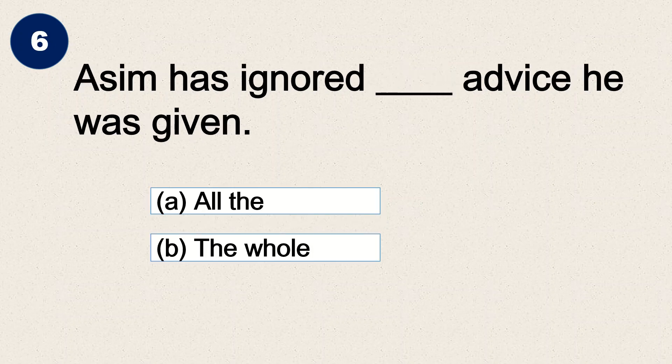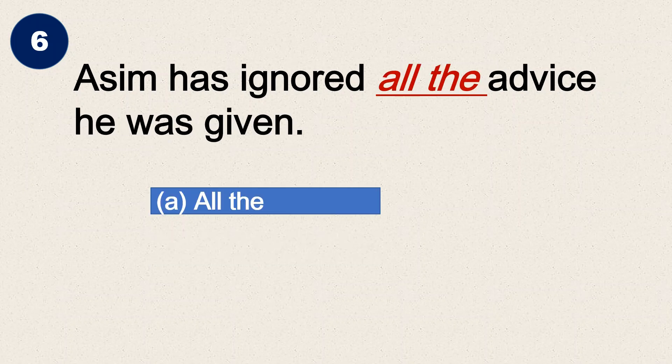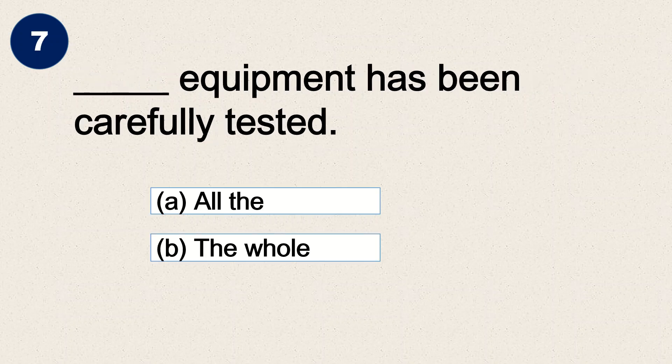Question six: Awesome has ignored blank advice he was given — 'all the advice' or 'the whole advice'? The answer is 'all' — Awesome has ignored all the advice he was given. Question seven: blank equipment has been carefully tested.